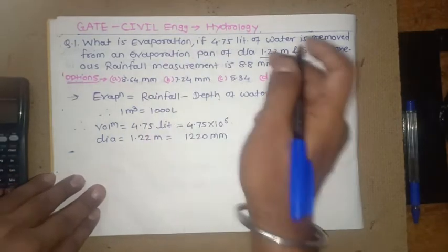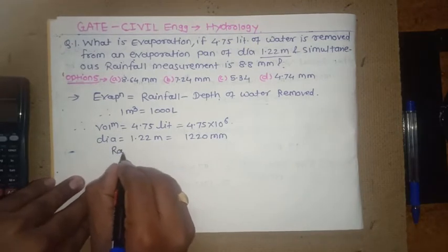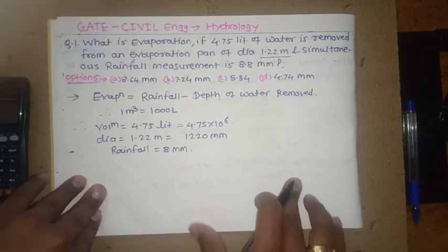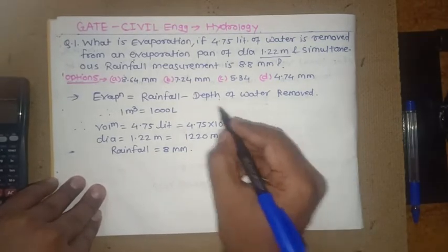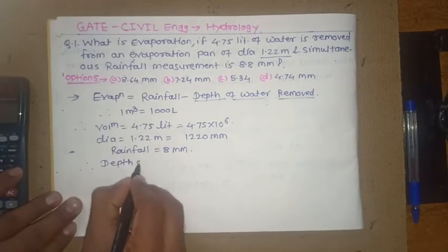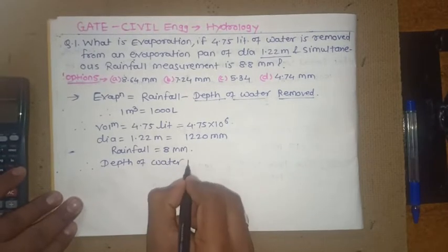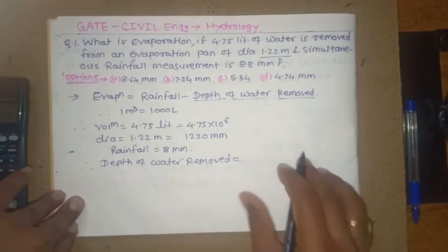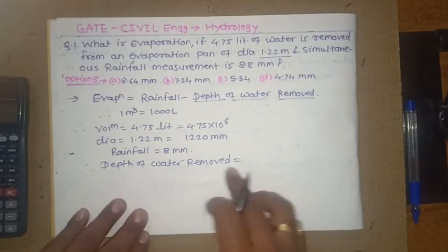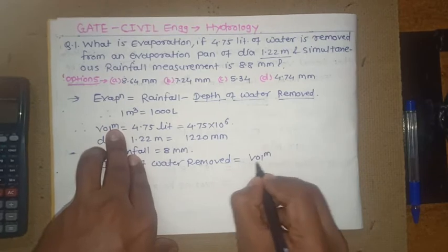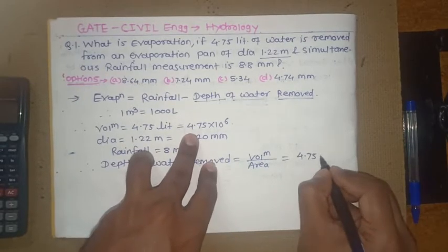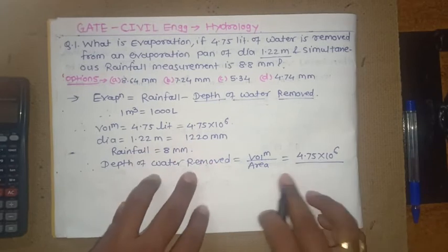Now we have to find out this parameter first, depth of water removed. Depth of water is nothing but volume upon area.